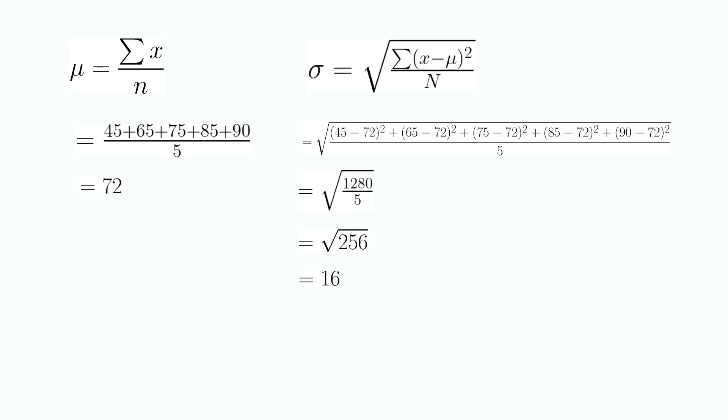Now that we know our mean and standard deviation, we can find that two standard deviations to the left of the mean is 72 minus 16 times 2, which is 40. And to the right of the mean is 72 plus 16 times 2, which is 104.